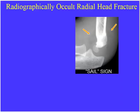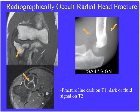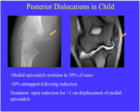The sail sign represents a large effusion within the elbow. In an adult, the most likely cause is an occult radial head fracture; in a child, an occult supracondylar fracture. On MR imaging, fractures appear as linear dark signal on T1; on T2, they can be dark or bright depending on fluid tracking within the fracture fragment. Also shown: a child with posterior dislocation and avulsion of the medial epicondyle, which can become entrapped following reduction — visible on MR or plain film.